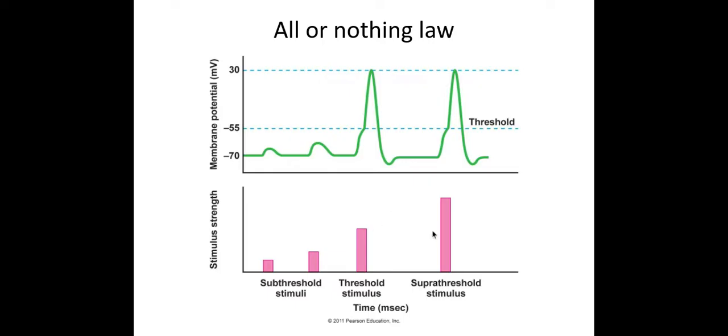Now as you can see in both these instances, the action potential is exactly the same magnitude. This last one here is a stronger stimulus, but the action potential is exactly the same. Now this is the all or nothing law. It basically means you either have an action potential or you don't.